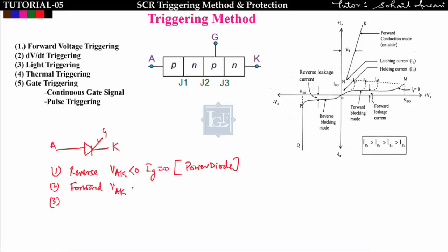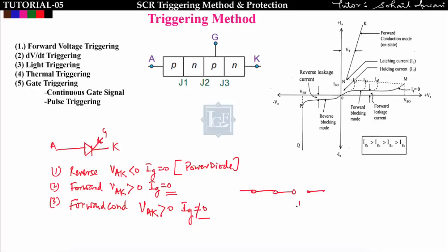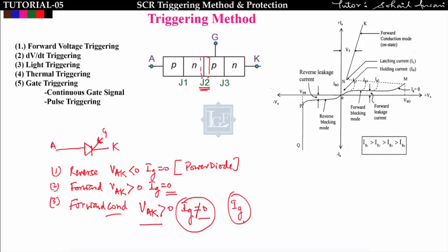The second mode is forward blocking mode — we are supplying VAK greater than 0 and not giving gate current, so it blocks the positive voltage and does not allow current to flow. In the third case, forward conducting mode, we supply VAK greater than 0 and also give gate current IG not equal to 0. The gate current neutralizes the stored charge across junction J2, decreasing the depletion width so the SCR starts conducting.